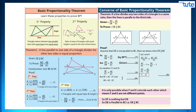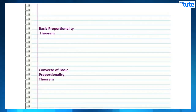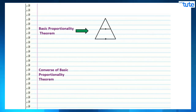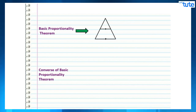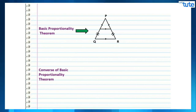Before we go ahead and start solving the problems, let us first revise these two theorems. The first is the basic proportionality theorem. It states that if a line is drawn parallel to one side of a triangle to intersect the other two sides in distinct points, the other two sides are divided in the same ratio. For example, in triangle PQR if ST is parallel